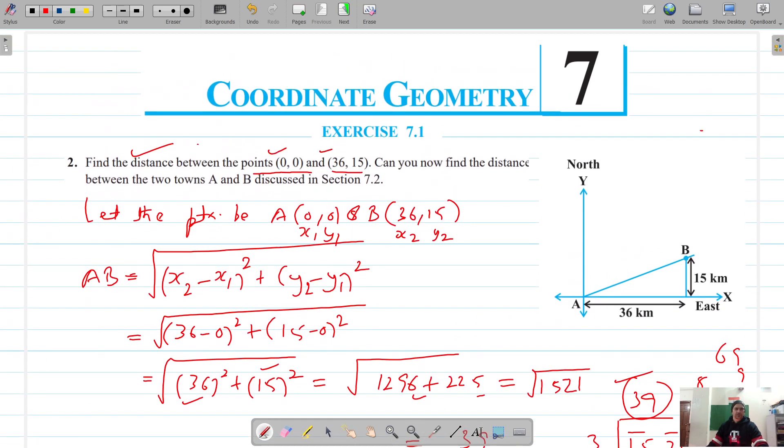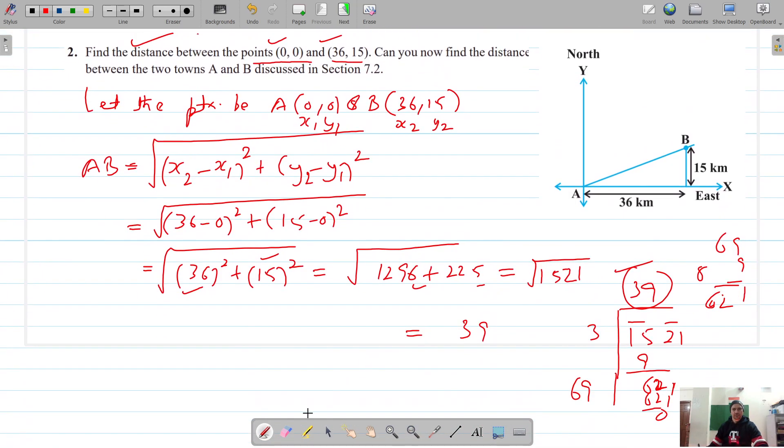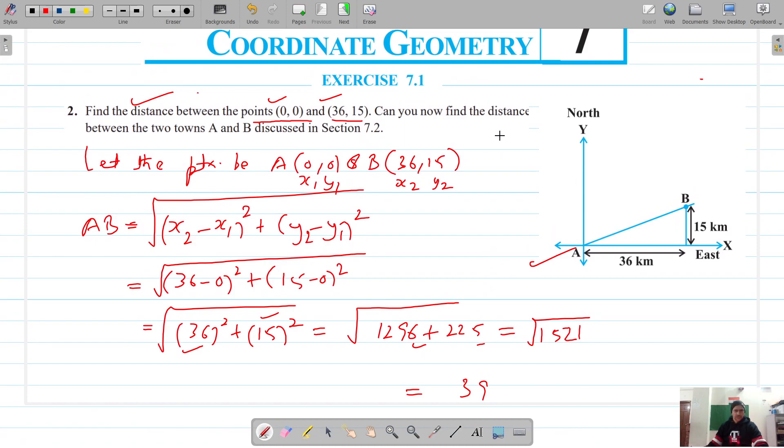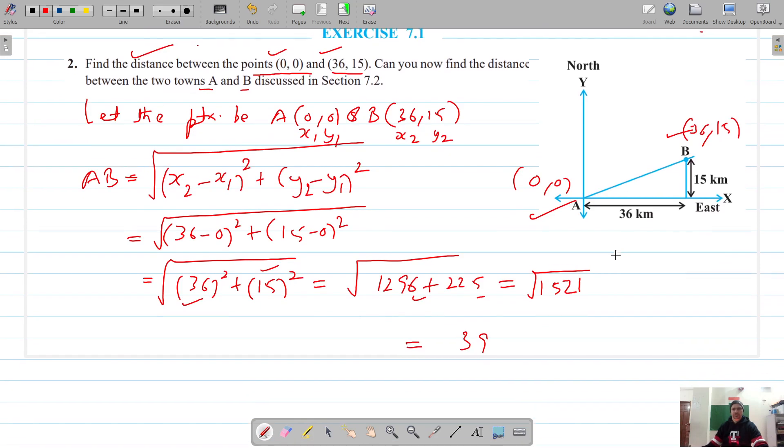So this is the distance between these two points. Now further it's asked in section 7.2 to find the distance between the two towns A and B. So A is actually at (0,0) and the coordinates of B: the distance on the x-axis is 36 and the distance along the y-axis is 15, so the coordinates of B are (36,15).